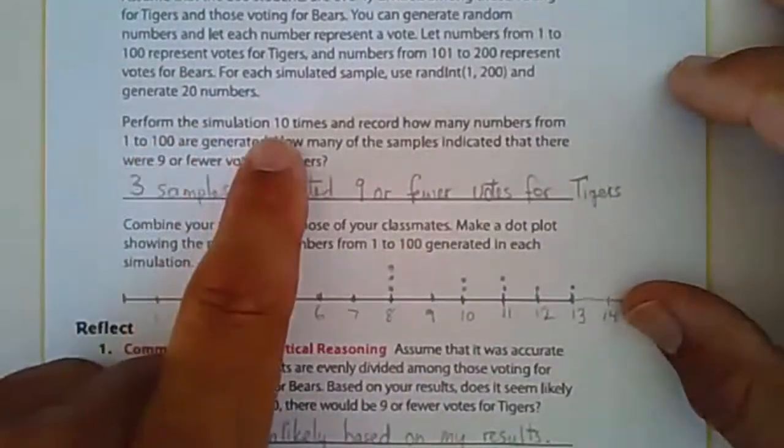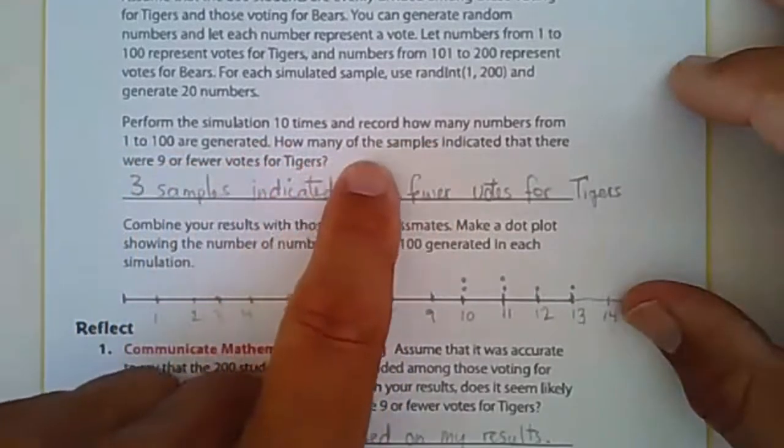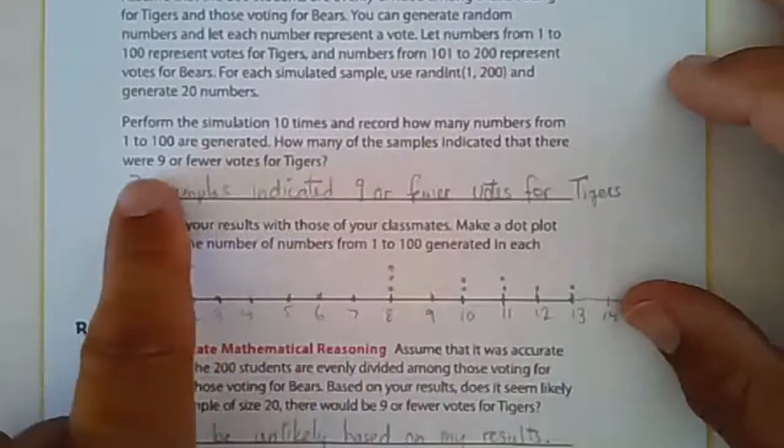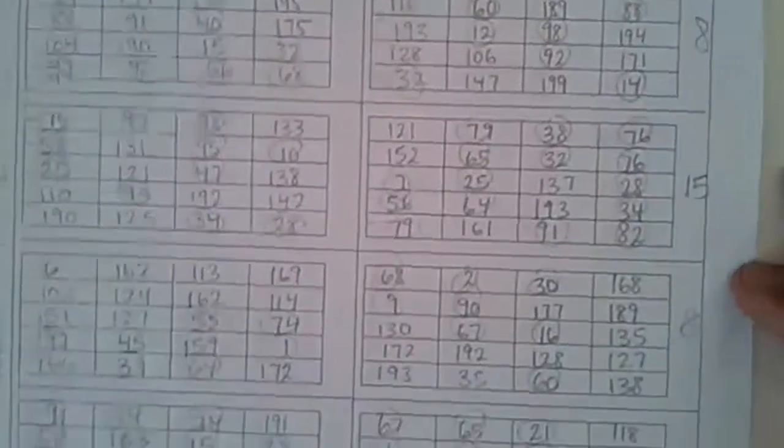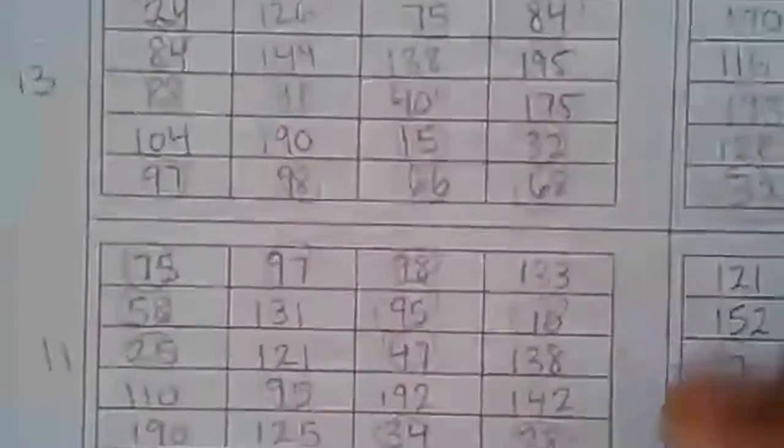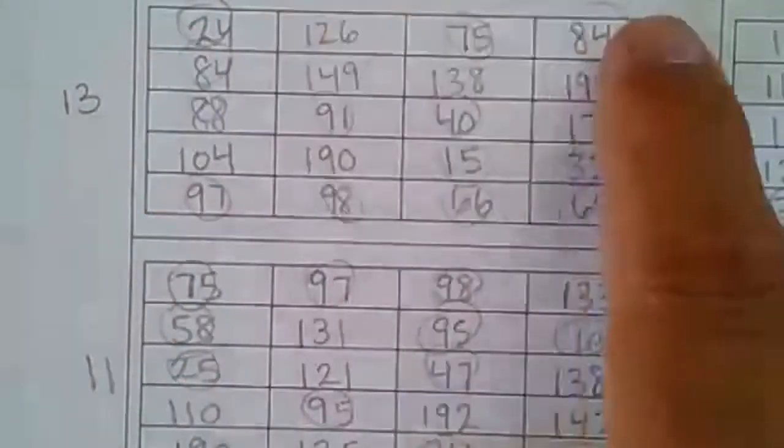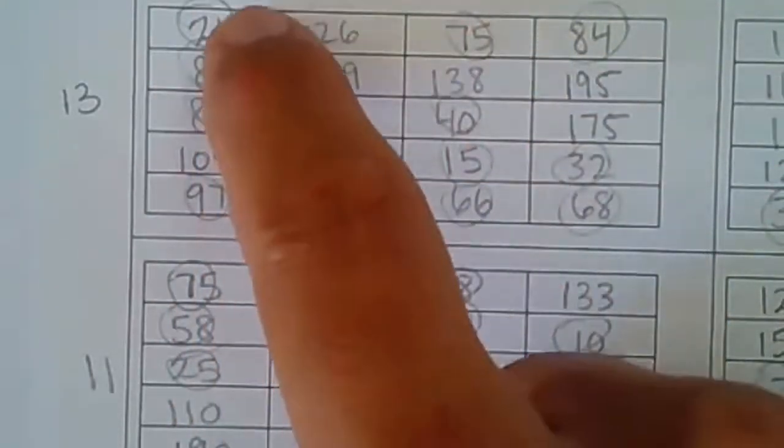Perform this simulation 10 times to record how many numbers from 1 to 100 are generated. How many of the samples indicated that there were nine or fewer votes for Tigers? I did this, I did it here. Look at all this right here. If I look here, this is four by five, so four times five is twenty. There's twenty numbers here.